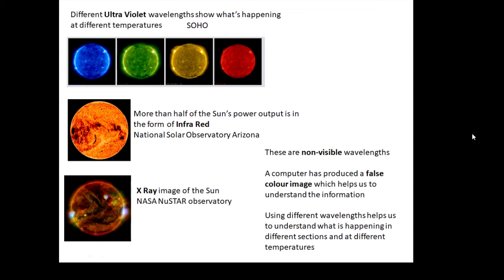These are non-visible wavelengths, which means we can't actually see them. The images we're looking at are called false color images, produced by a computer to help us understand what's going on. Using different wavelengths helps us understand what's happening in different sections and at different temperatures.